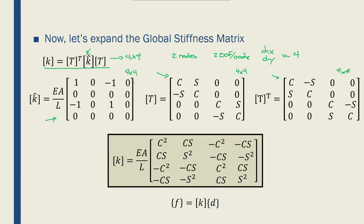Now if I do this multiplication, if I put this transpose of the transformation matrix here, the local coordinate system here and the transformation matrix there, I will end up with this equation.